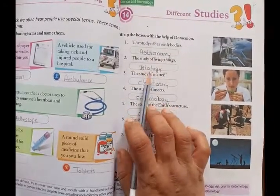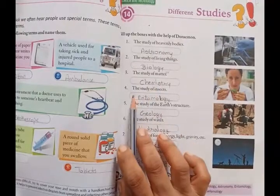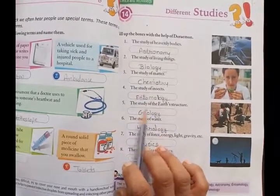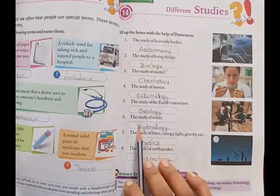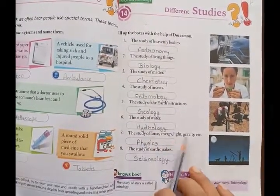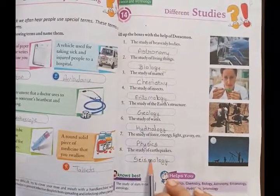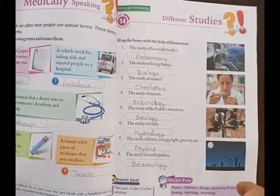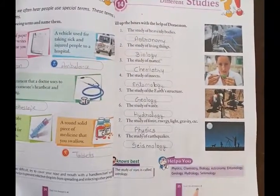So students, in summary: the study of heavenly bodies is astronomy, the study of living things is biology, the study of matter is chemistry, the study of insects is entomology, the study of the earth structure is geology, the study of water is hydrology, the study of force, energy, light and gravity is physics, and the study of earthquakes is seismology.